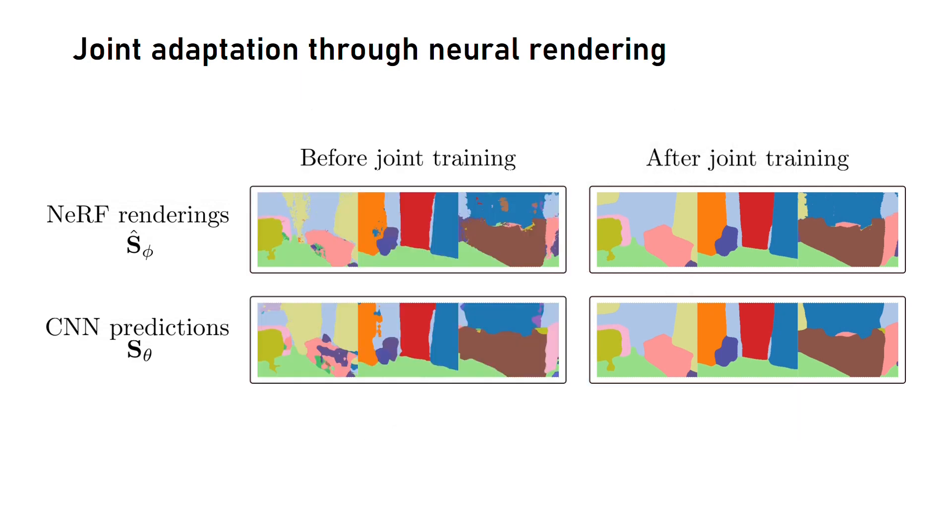This joint adaptation enables 2D-3D knowledge transfer. On one hand, artifacts in the 2D predictions are effectively resolved through the view consistency enforced by semantic NeRF. On the other hand, the smoothness of the 2D predictions transfers to the 3D segmentation.